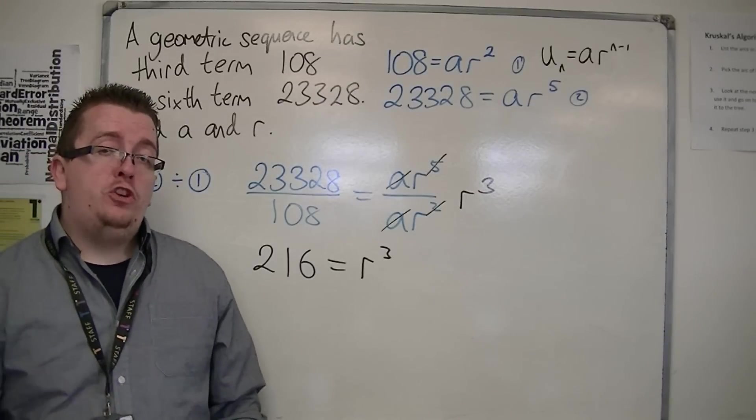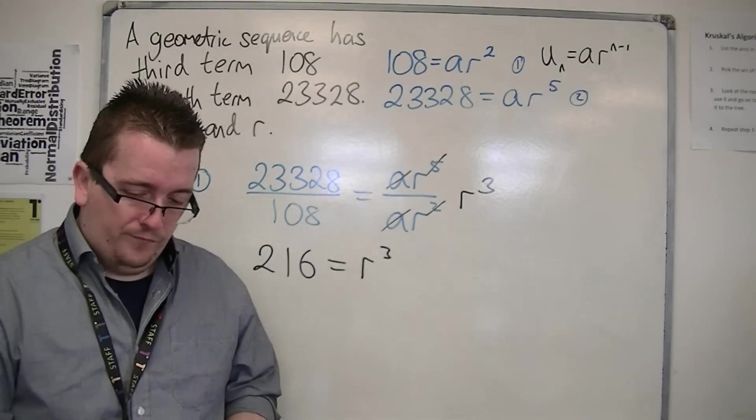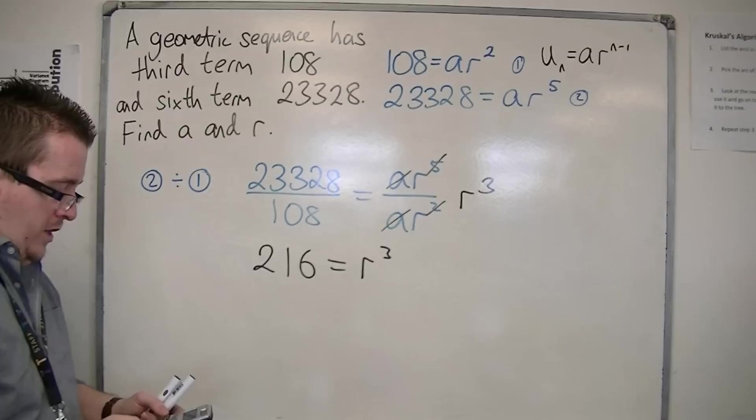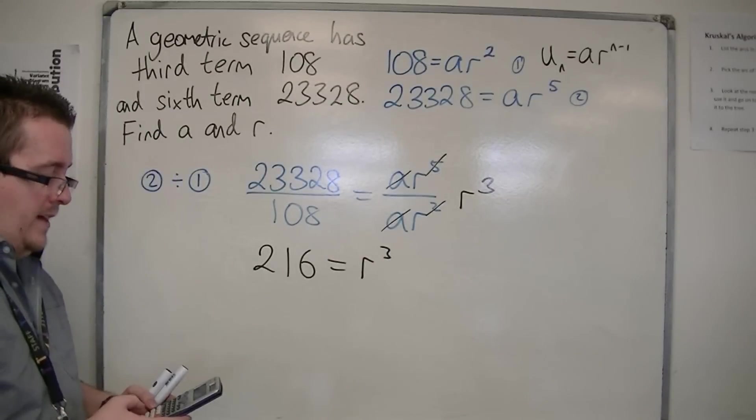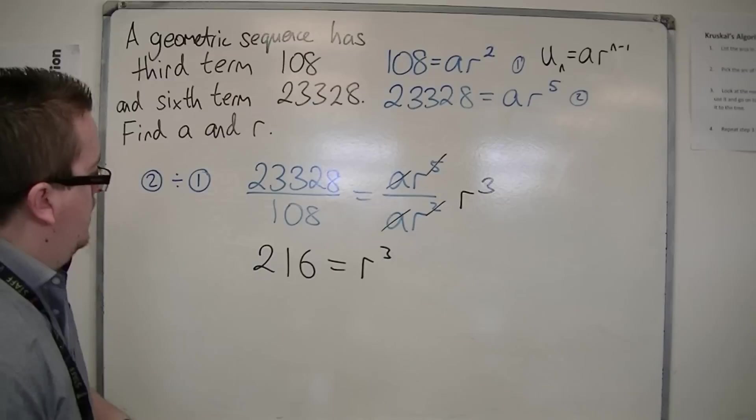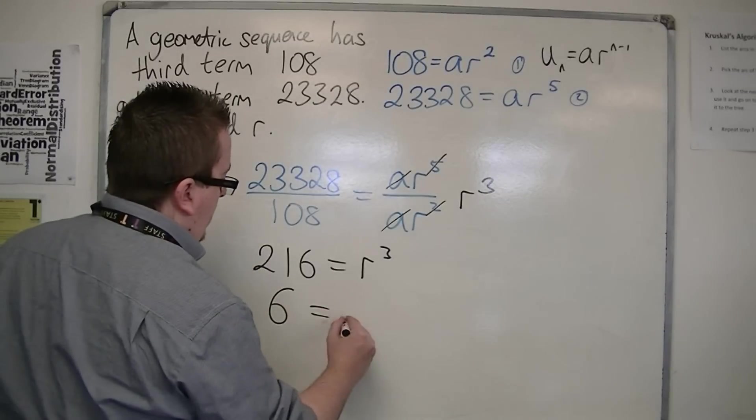So now if we cube root both sides, if I cube root 216, I get 6. So R is 6.